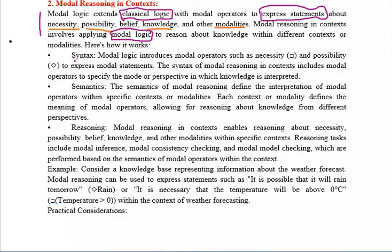Now let's see how it works. Here we will also have syntax, semantics, and reasoning — the same three things that first order logic has. Similarly, modal logic also has these three things. First one is syntax. Modal logic introduces modal operators. It is extended from classical logic where we have operators like AND, OR, implies, biconditional, and negation, as shown in a table.